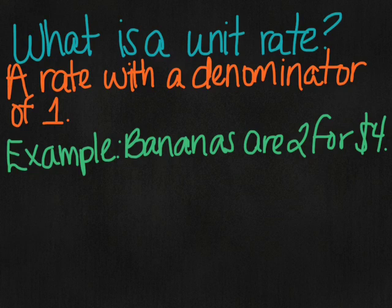Unit rate is just a rate or comparison between two numbers with a denominator of one. For example, when you go to the store, you might see a sign that says bananas are two for four dollars.